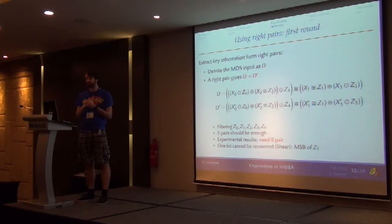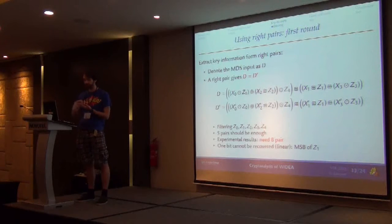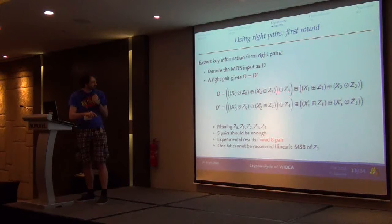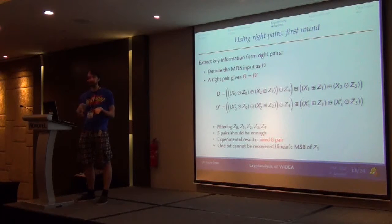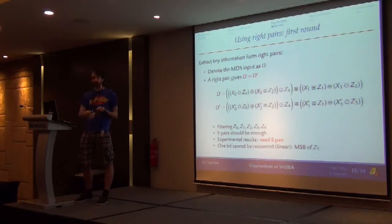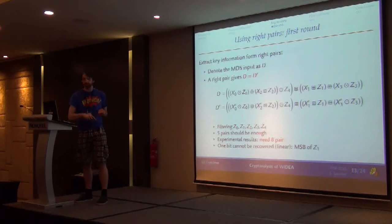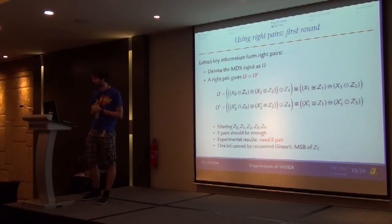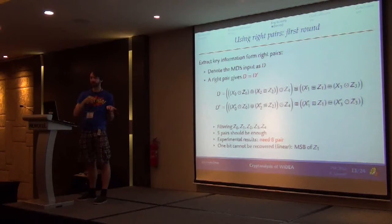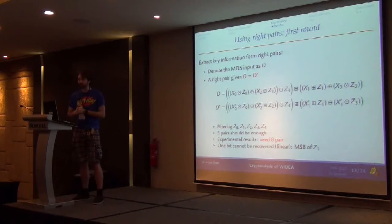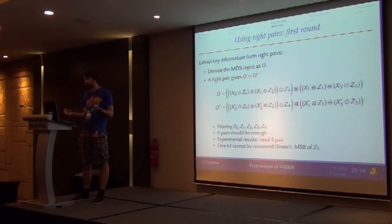We look at how values are computed inside the cipher. We know that if a pair is following the trail, the input to the MDS matrix is inactive. So we call this value d — the input to the MDS matrix — and it can be expressed in terms of the plaintext and the key. As soon as we have the right pairs, this d value equals d prime. This gives us filtering on the five subkeys involved in this expression. A simple analysis says that with five right pairs you'd get a single key candidate. But from our experiments implementing the attack, it turns out you need about eight pairs — a very small increase.